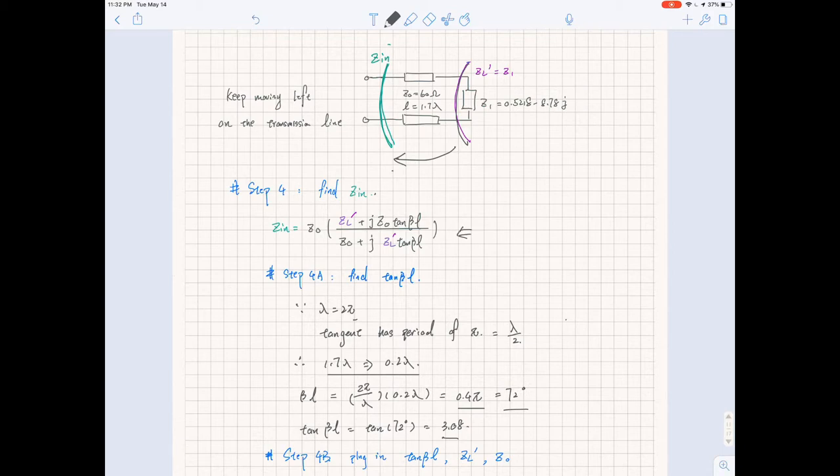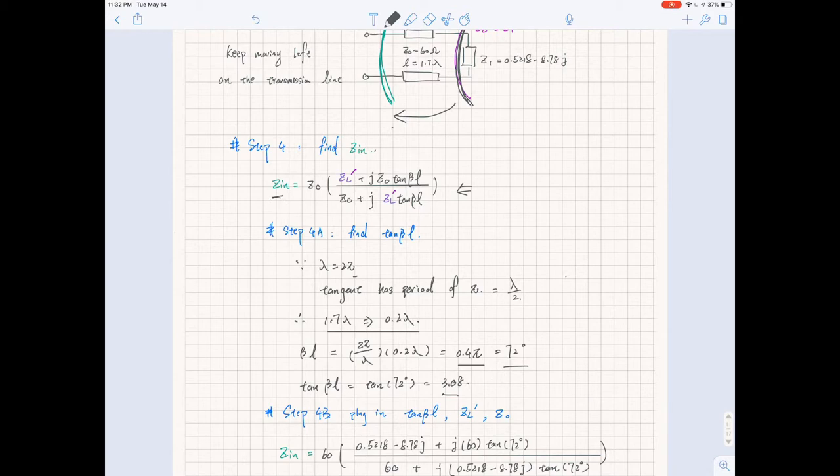This is the equation for calculating Zin, and ZL prime is the equivalent load impedance. In order to calculate Zin we also need to find out what the value of tangent beta l is.